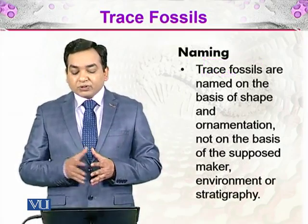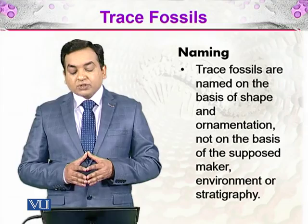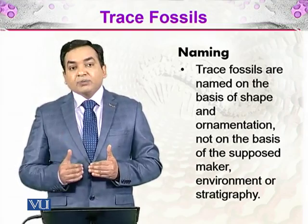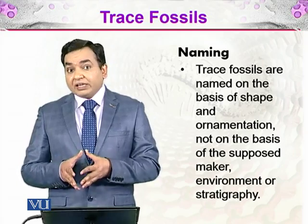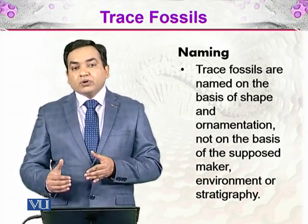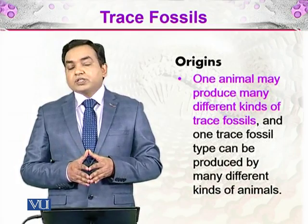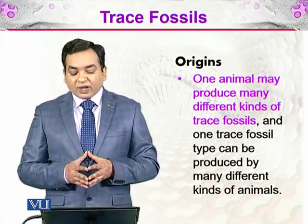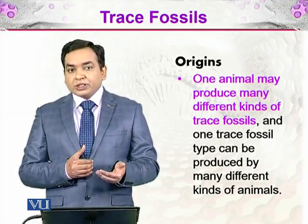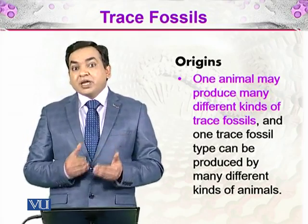Trace fossils are named on the basis of shape and ornamentation, not on the basis of the fossil maker, environment, or stratigraphy. The fossil maker, the environment, and the stratigraphy are all irrelevant to naming; instead we name them based on how they look and what their ornamentation is. One animal may produce many different kinds of trace fossils, and one type of trace fossil can be made by many different animals.